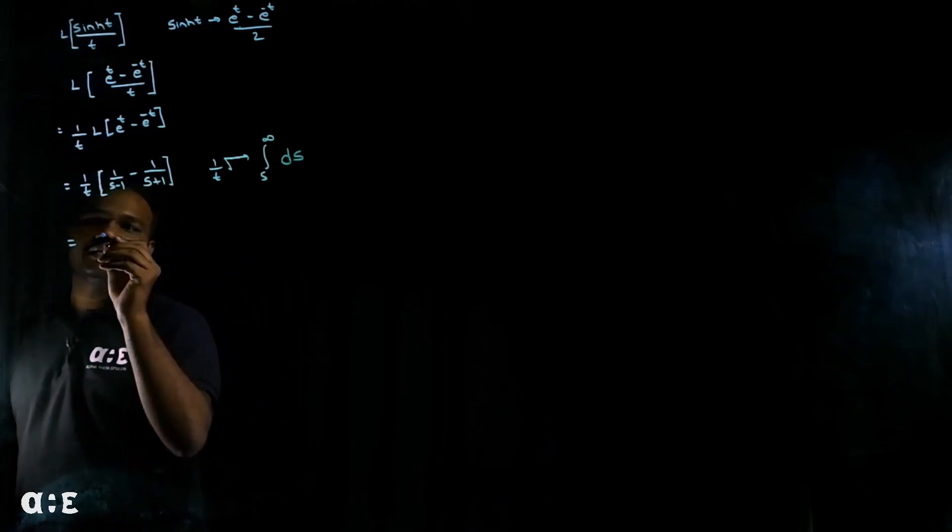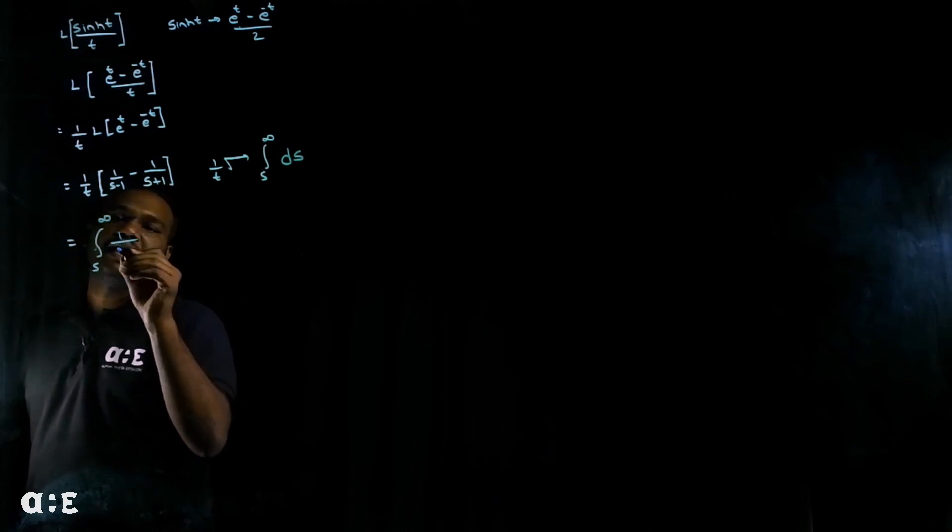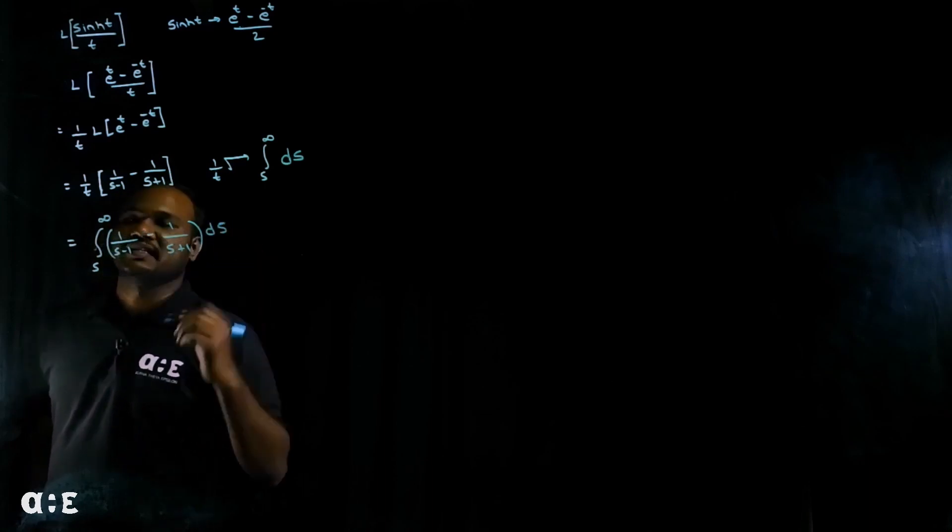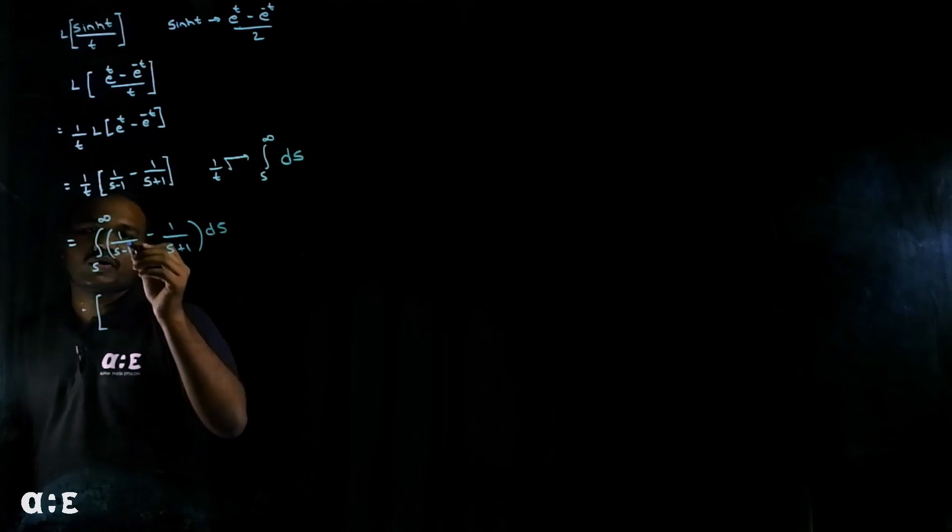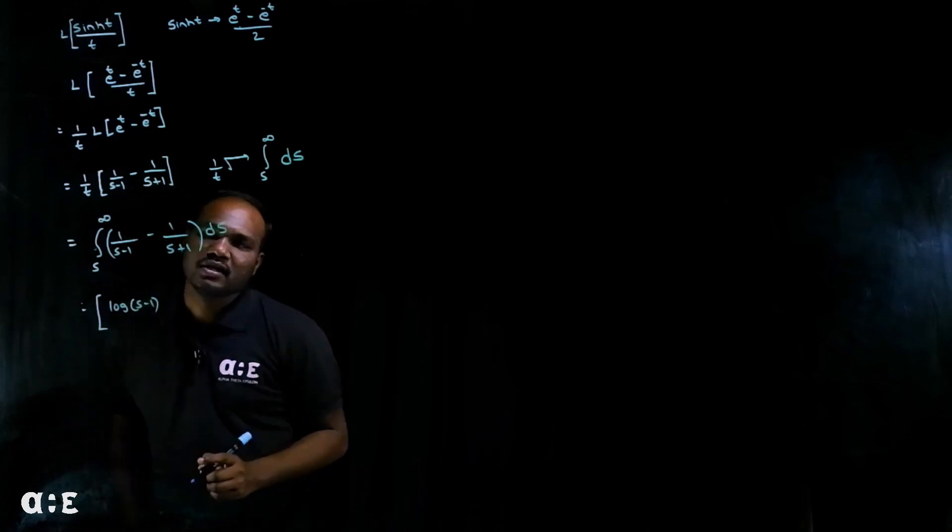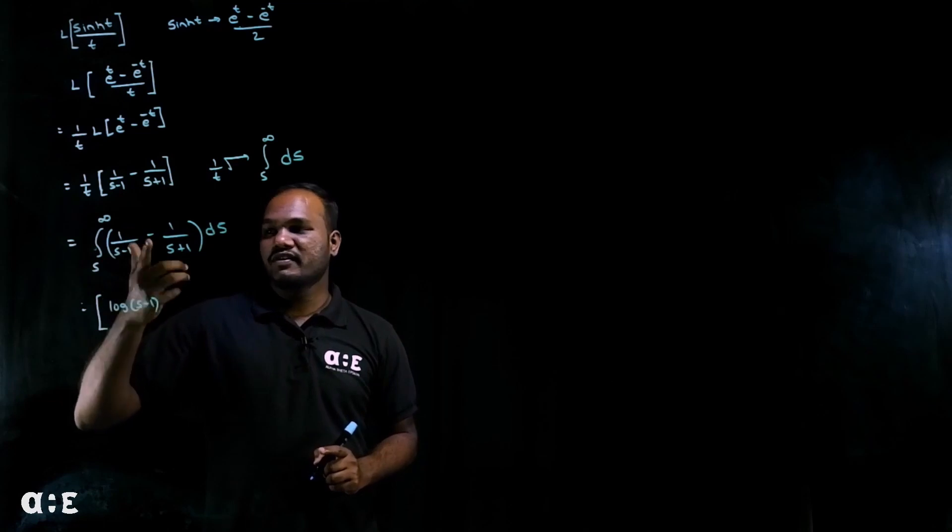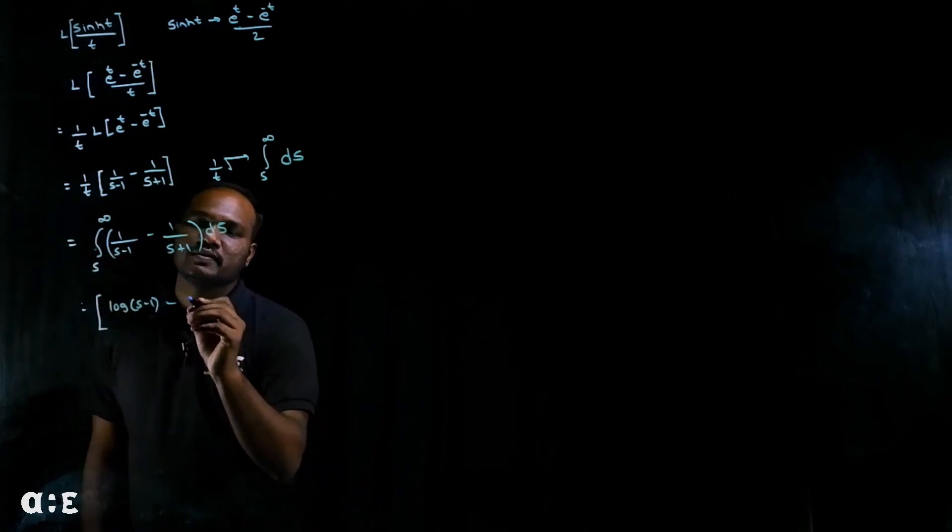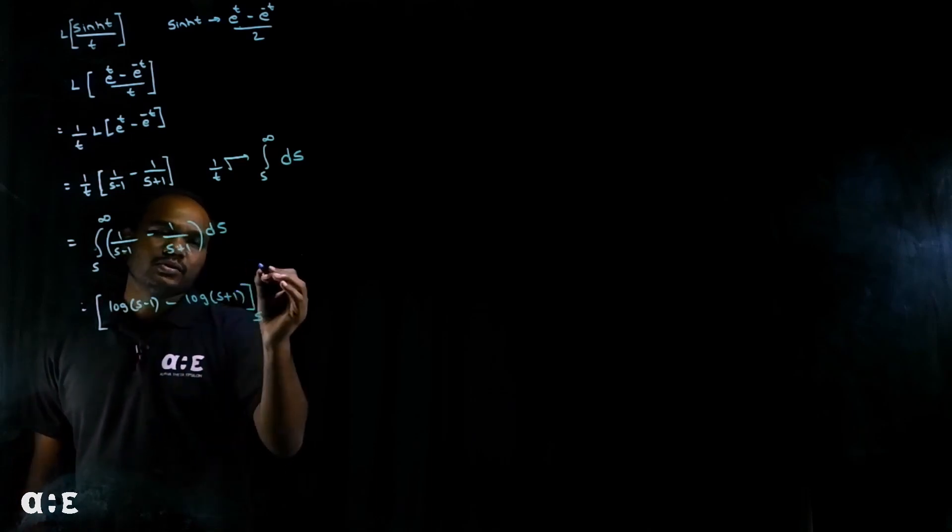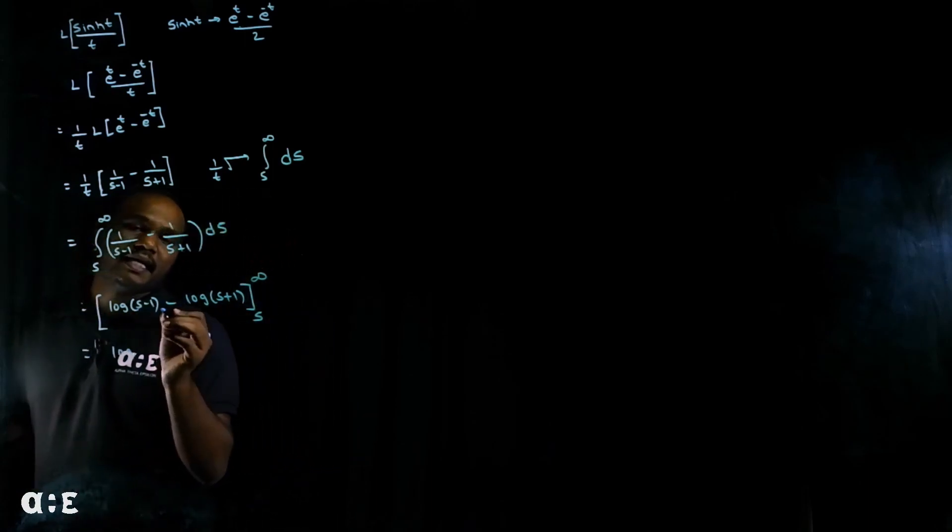So one by t can be replaced with integration from s to infinity: one by s minus one minus one over s plus one. We integrate with respect to s. So what is one by s minus one integration? Log of s minus one. How do we know? Differentiation of denominator is in numerator. This also will get log of s plus one. What are the limits? s to infinity.